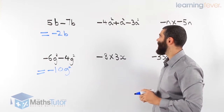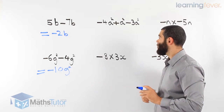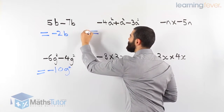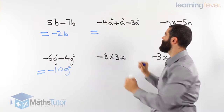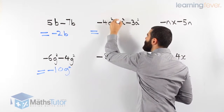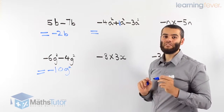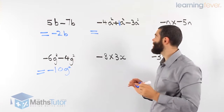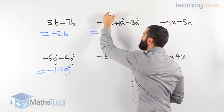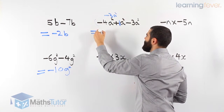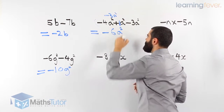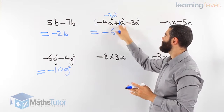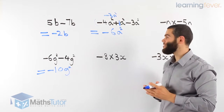Minus 4a squared plus a squared minus 3a squared. Are they like terms? A squared, a squared, a squared — yes, they are, so we can collect like terms. Minus 4 plus 1 — there is an invisible 1 in front of the a squared — gives minus 3a squared, and then minus 3a squared. So minus 3a squared minus 3a squared is minus 6a squared. Same rules apply: pronumerals follow the same rules as numerals. In algebra, we collect like terms — a squared, a squared, a squared — yes, we can complete this algebraic expression.